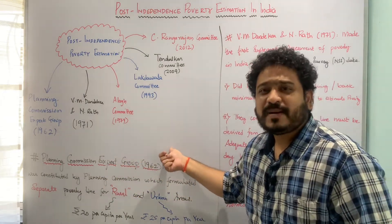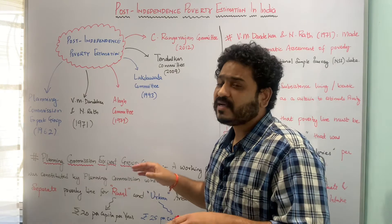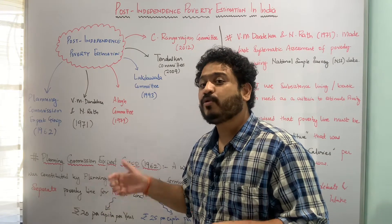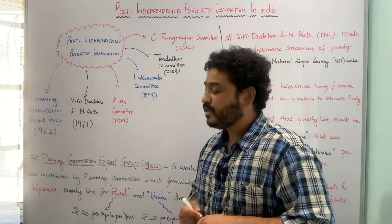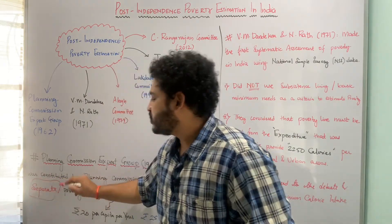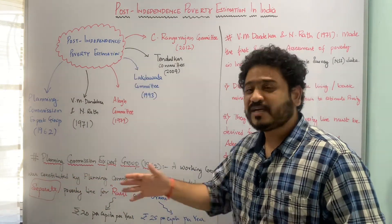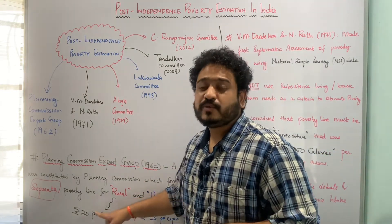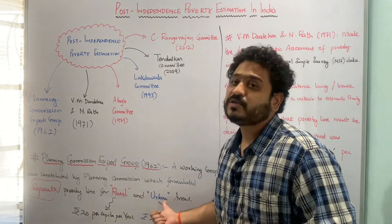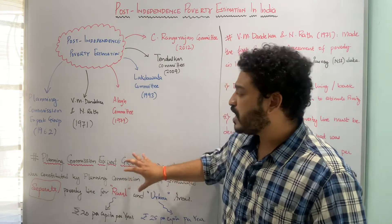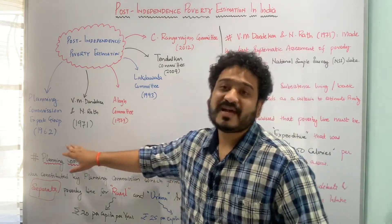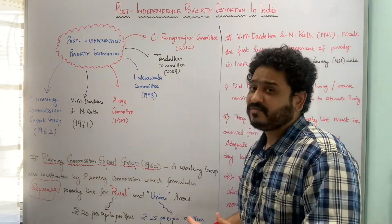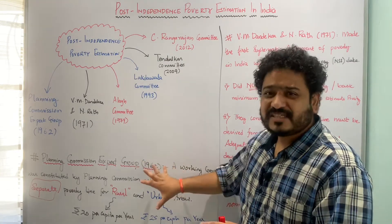This group was constituted by the Planning Commission to look at poverty estimation in India, and this group gave separate poverty line estimates for both urban as well as rural parts of the country. This was the first separate poverty line estimation post-independence for both rural and urban areas. For rural areas, it was Rs. 20 per capita per year, and for urban areas, it was Rs. 25 per capita per year.